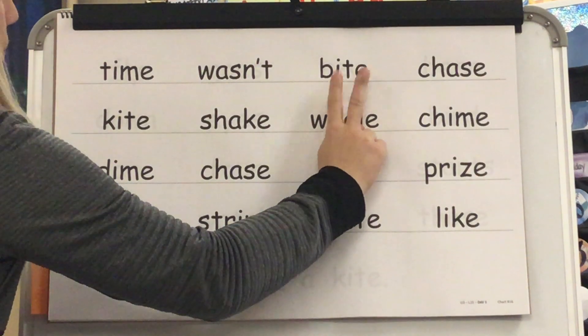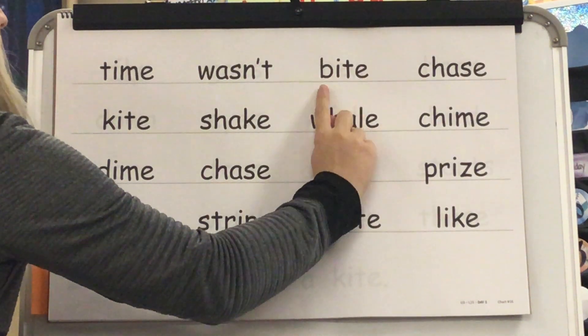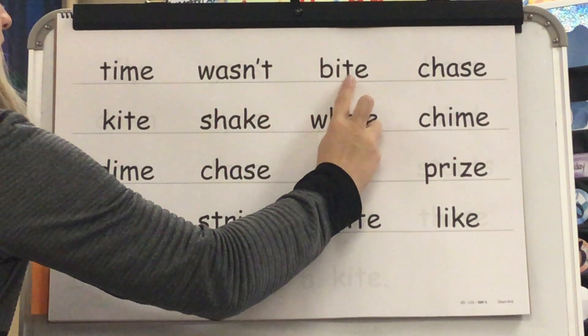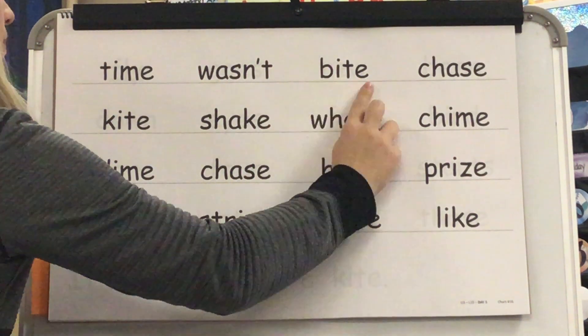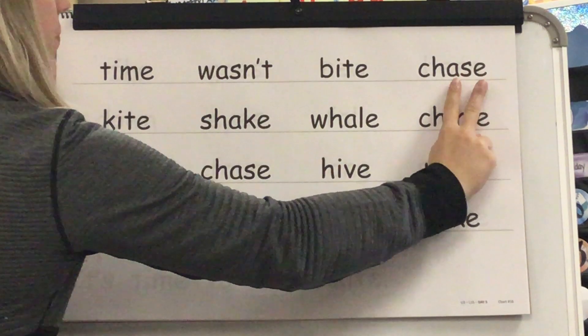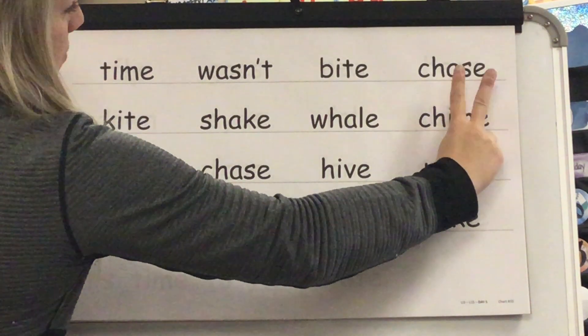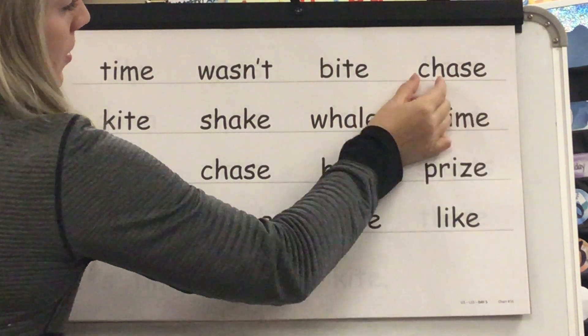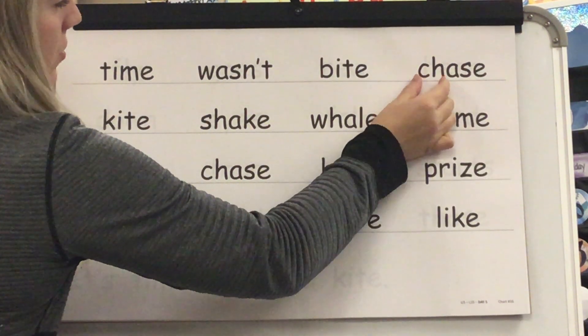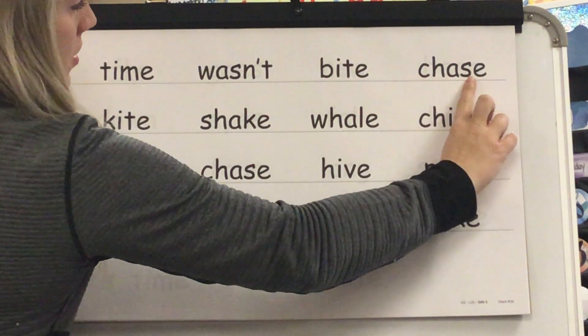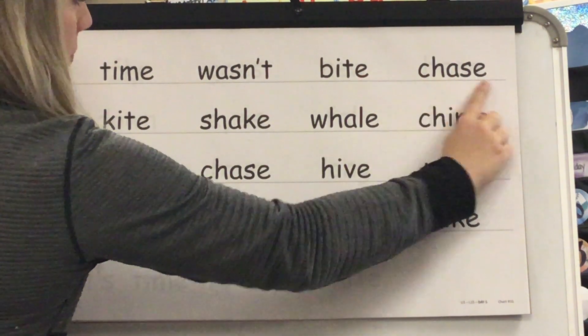Sound: I. Blend: B. I. Word? Bite. Sound: A. Blend: Ch. A. S. Word? Chase.